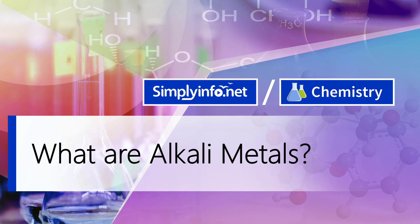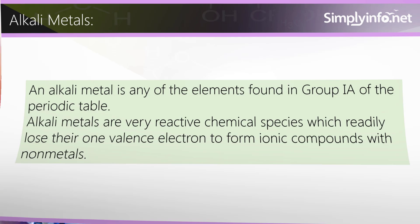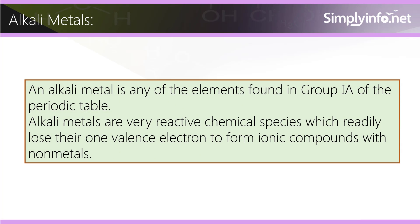What are alkali metals? An alkali metal is any of the elements found in group IA of the periodic table. Alkali metals are very reactive chemical species which readily lose their one valence electron to form ionic compounds with non-metals.